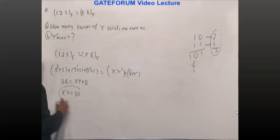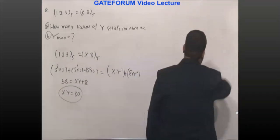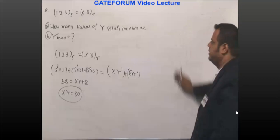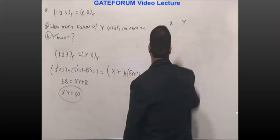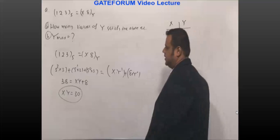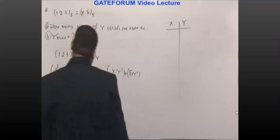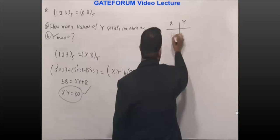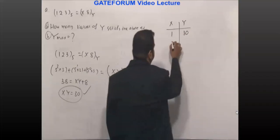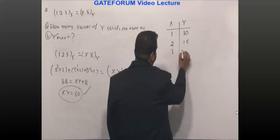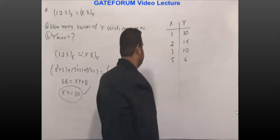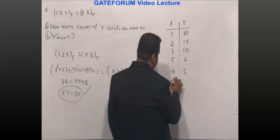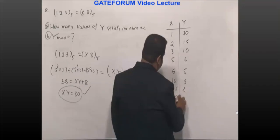We have the constraint XY = 30. Let us find all combinations of X and Y satisfying this product: (X=1, Y=30), (X=2, Y=15), (X=3, Y=10), (X=5, Y=6), (X=6, Y=5), (X=10, Y=3), (X=15, Y=2), (X=30, Y=1). You might think there are 8 possible values of Y, but this is not correct.